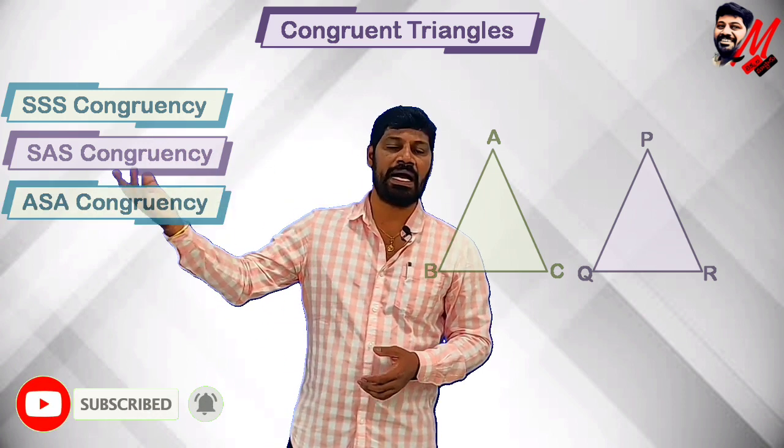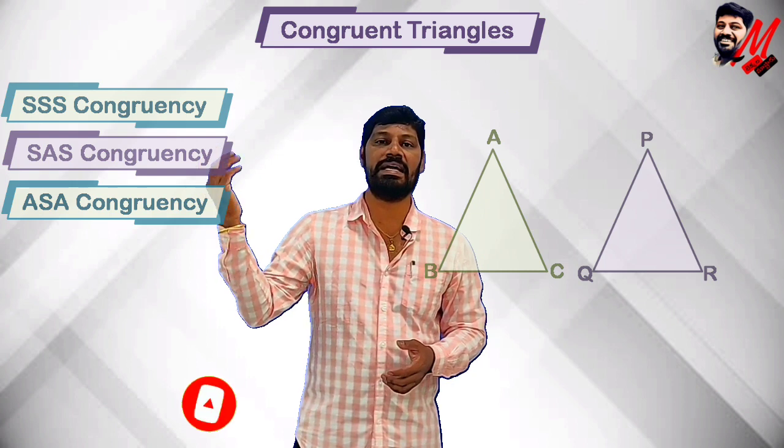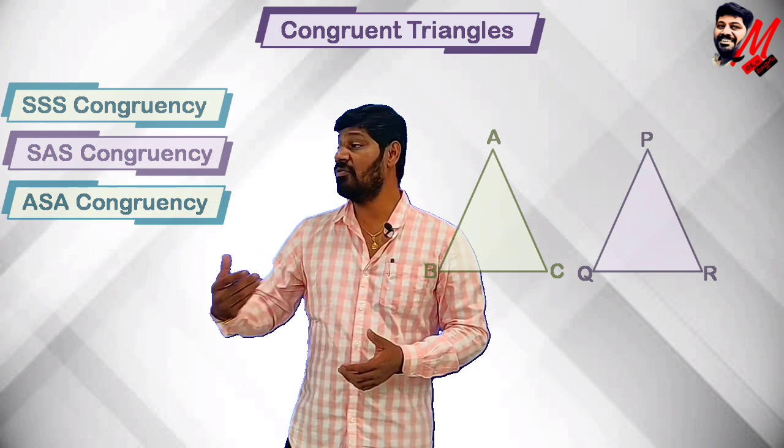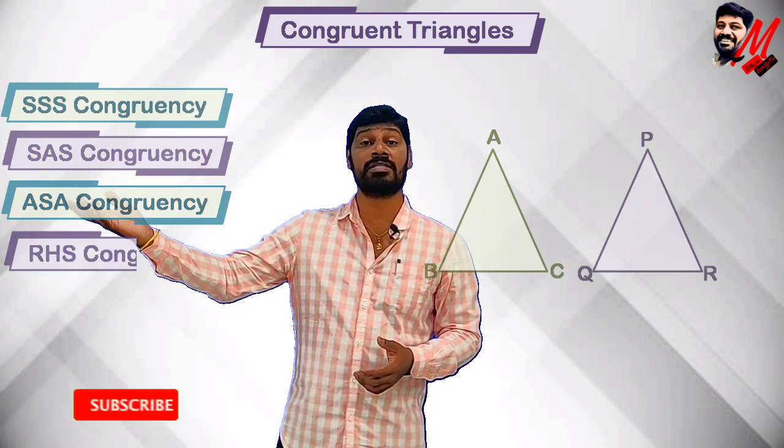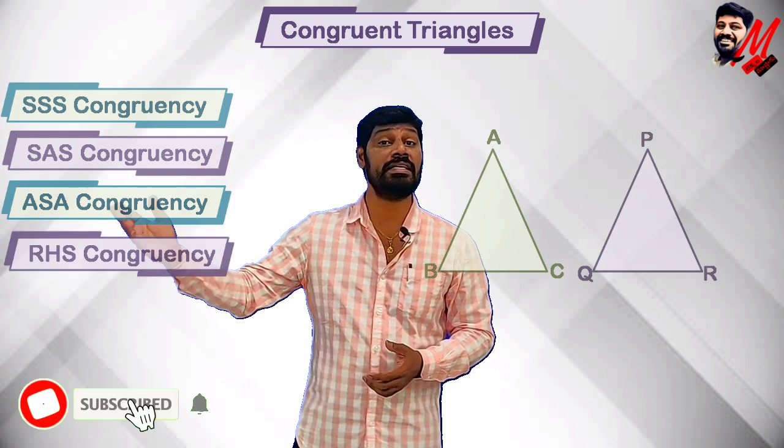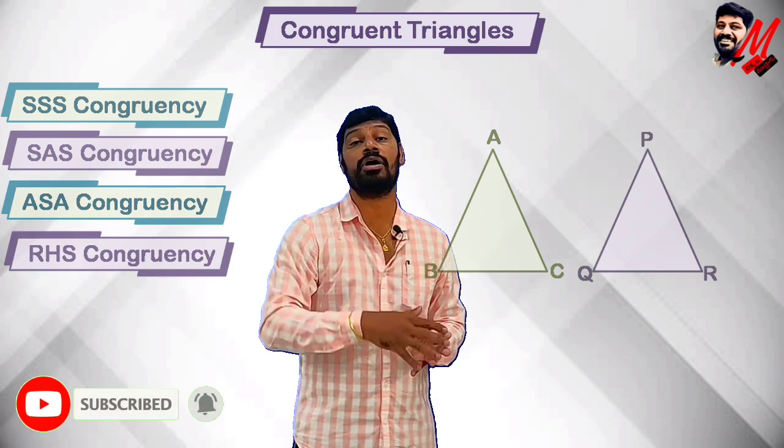The third one is ASA congruence — angle-side-angle. And the fourth one is RHS congruence — right angle, hypotenuse, side congruence.